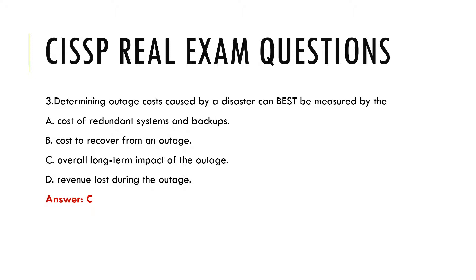Question 3. Determining outage costs caused by a disaster can best be measured by the: a. Cost of redundant systems and backups, b. Cost to recover from an outage, c. Overall long-term impact of the outage, d. Revenue lost during the outage. Answer: c.